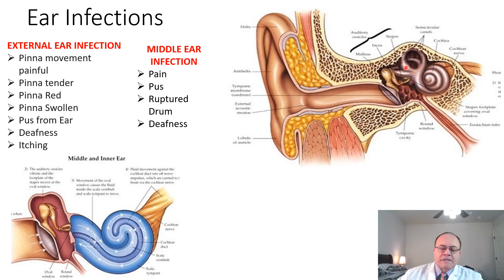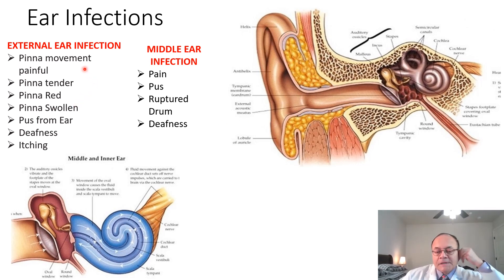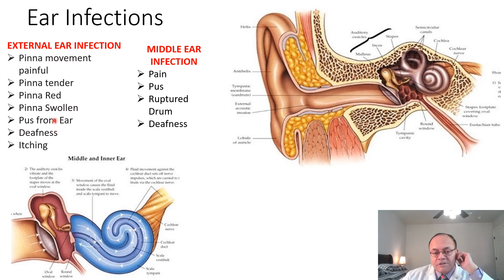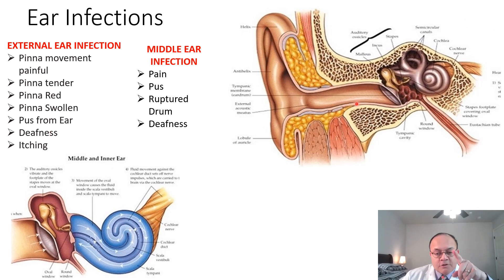When we have external ear infections, movement of the ear pinna becomes very painful. The pinna becomes red, can be swollen shut so we can't see the membrane. There may be pus drainage from the ear, deafness because it's swollen shut, and there may be itching, especially if there is fungus infection of the external ear. Fungus infection is especially common in diabetics.